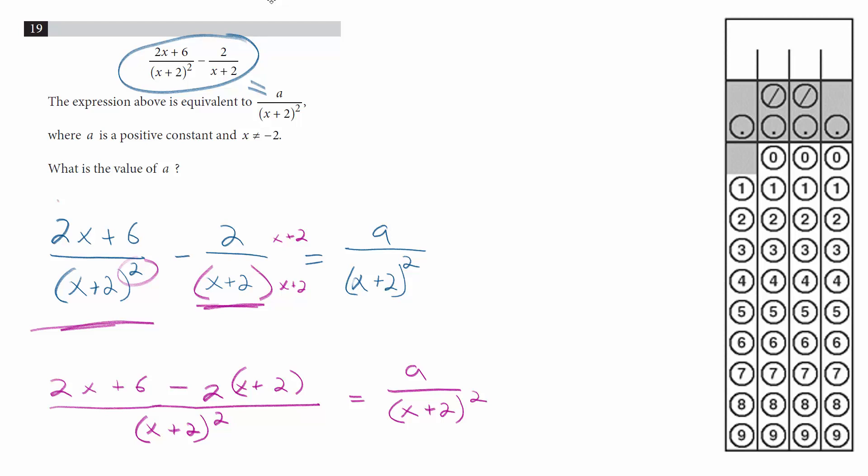And what we're left with is two large fractions that both have the same denominator. And if they both have the same denominator, that means that their numerators are equivalent.